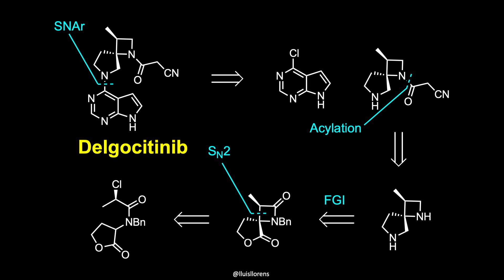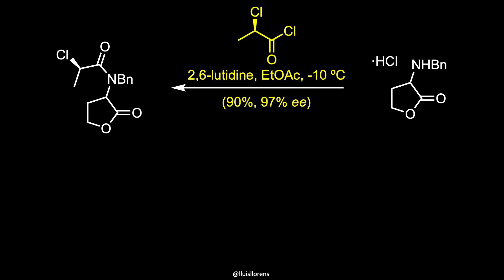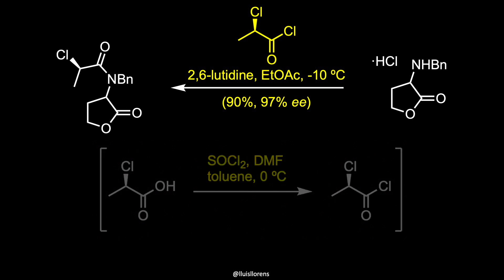The synthesis of the molecule involves a nucleophilic aromatic substitution reaction, an oxidation reaction, a functional group interconversion, and an SN2 reaction on an intermediate that can be prepared from a commercial bromolactone. The synthesis begins with an SN2 reaction involving the bromolactone and benzylamine to provide the alpha-aminolactone, which was isolated as the hydrogen chloride salt after precipitation from hydrochloric acid in ethyl acetate. The amine is then acylated with an enantiopure acid chloride, which can be prepared by thionyl chloride treatment of the commercial acid to deliver the desired lactone.